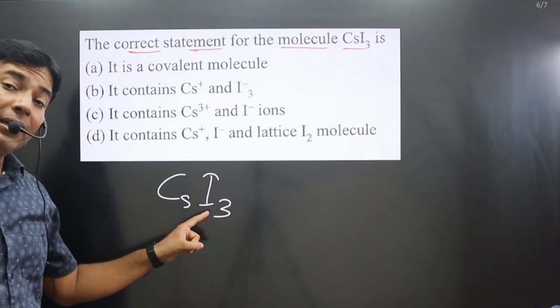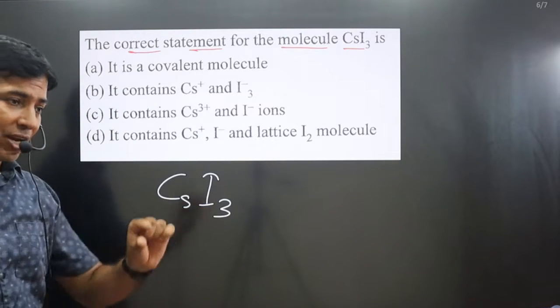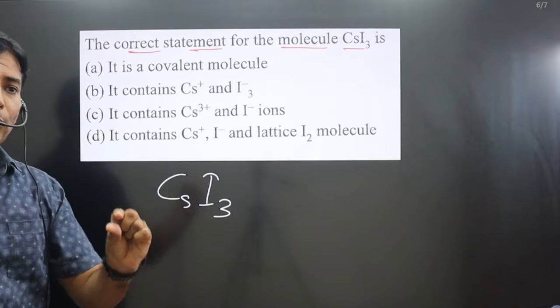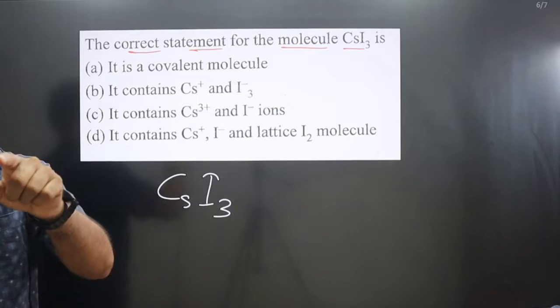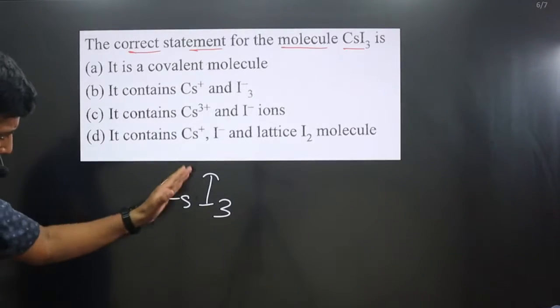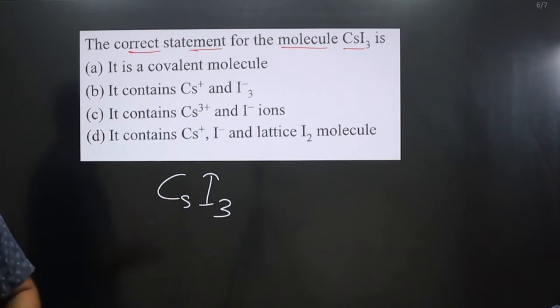This is non-metal, this is metal. Whenever metal and non-metal combination is there, they always form ionic bond. So we can say this is an ionic compound.